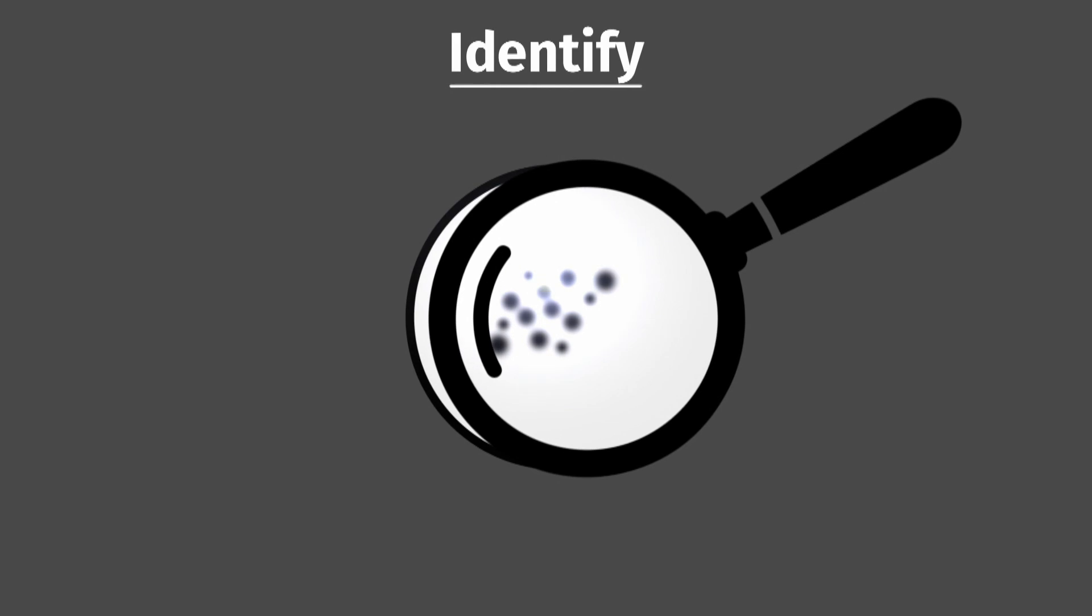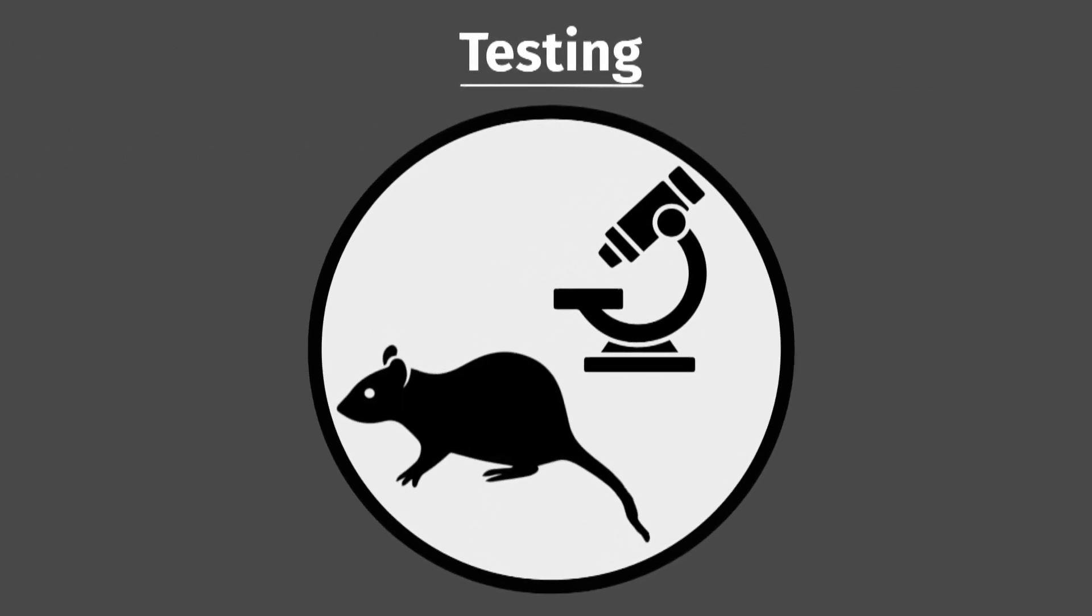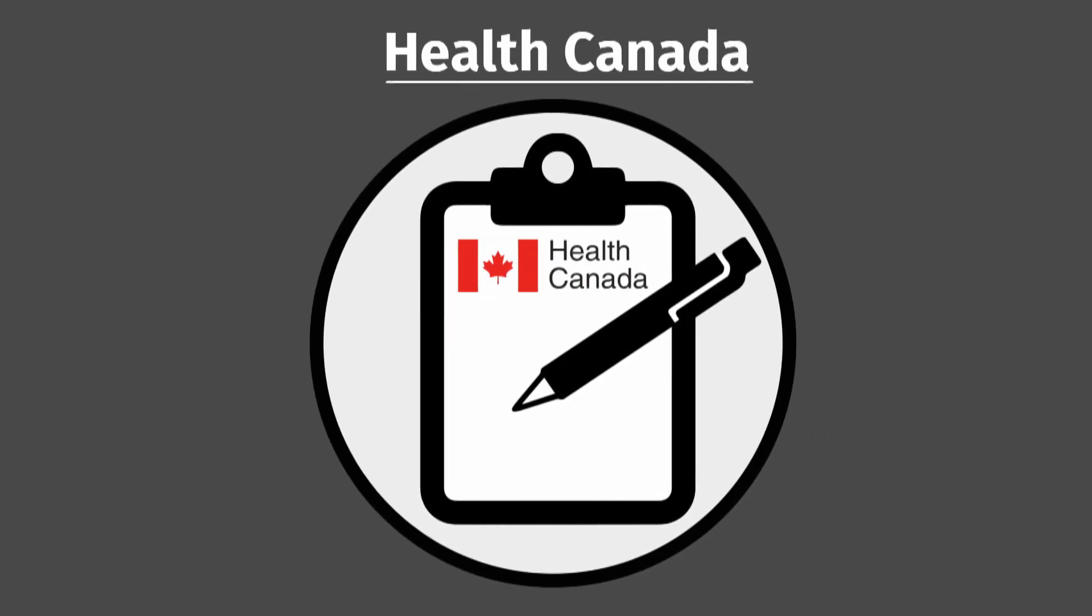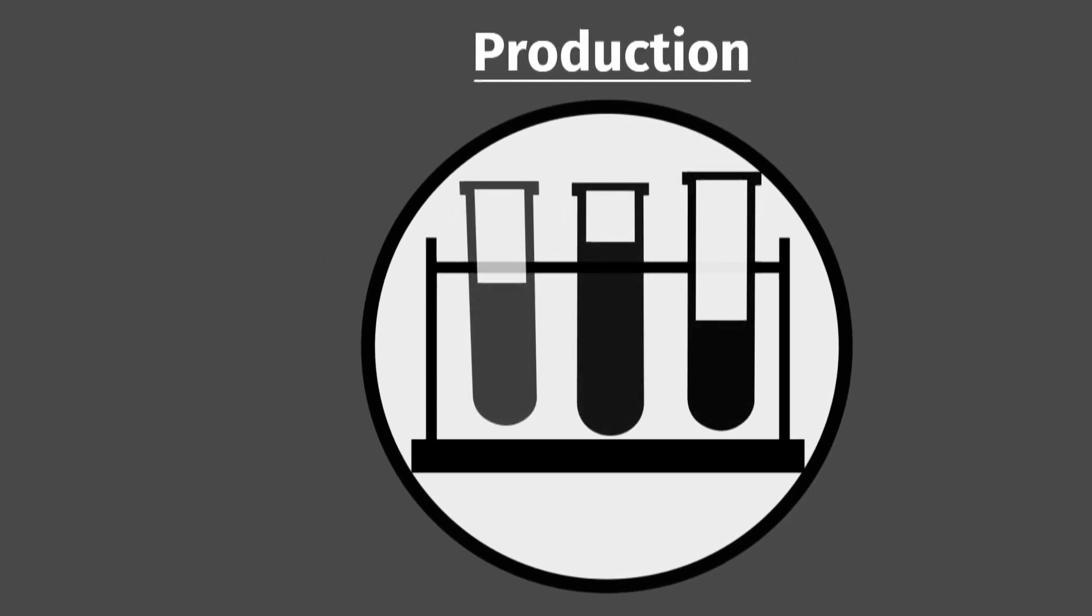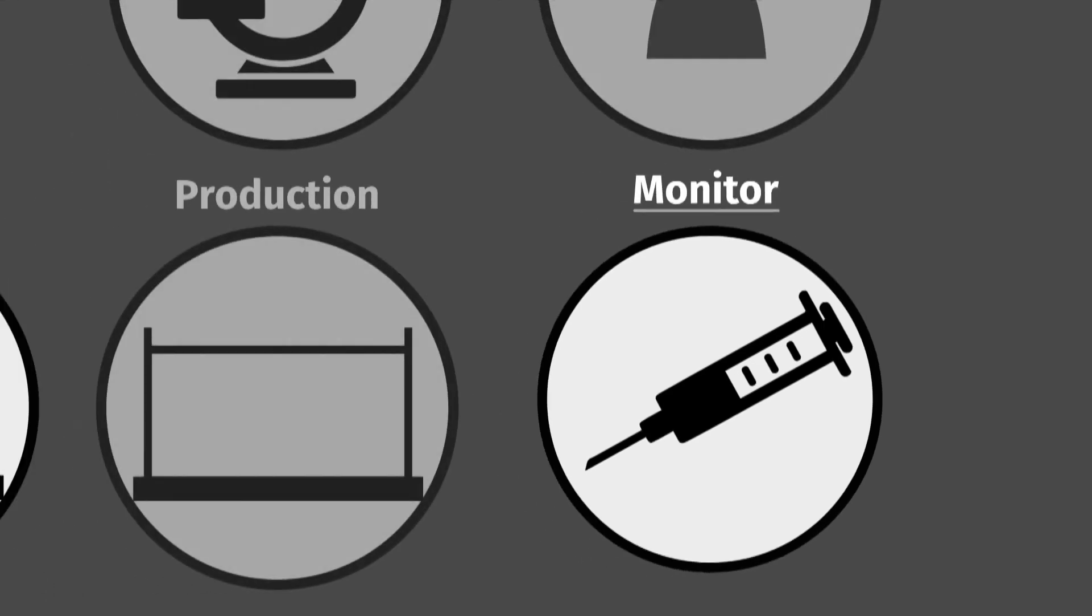Scientists must find a trigger particle to kick-start the body's defenses, pass several stages of testing, some involving thousands of patients. Then, if Health Canada approves, a drug company has to mass-produce the vaccine and monitor it for reactions. It all takes at least a year.